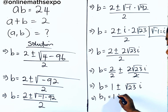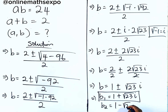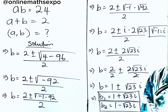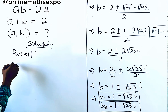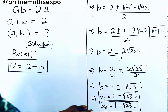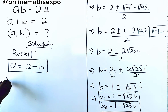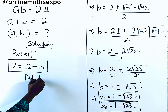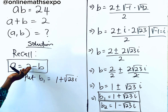Splitting the ± gives us: the first value of b is 1 + i√23, and the second value of b is 1 − i√23. To find the corresponding values of a, we recall that a = 2 − b from earlier. We will plug both values of b into this expression to get the corresponding values of a.